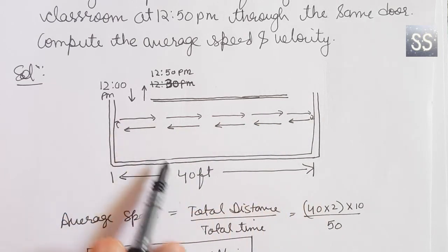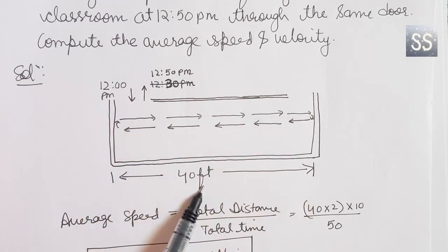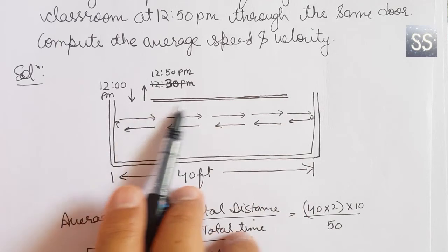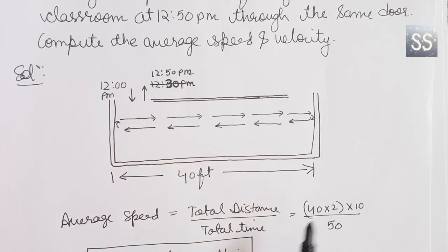So in 1 round, it will be 80 feet total. And we cover 10 rounds, so total distance will be 80 x 10. So total distance will be 800 feet.